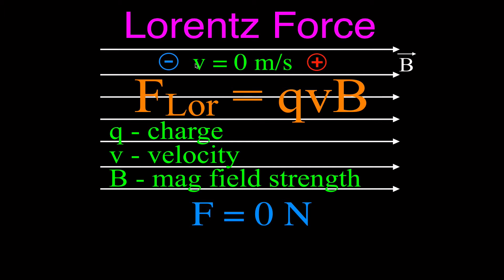So we have a charge and a magnetic field, but the velocity is zero — then there is no force on those charged particles. That means if I take a charged particle and put it in a magnetic field with zero velocity, when it's at rest, it's just going to stay there. There is no force; it's not going to move or accelerate like in an electric field. That is the first case.